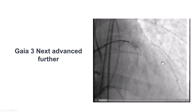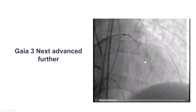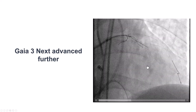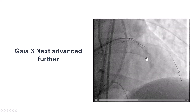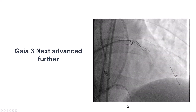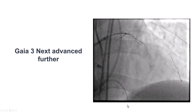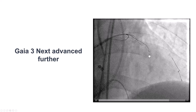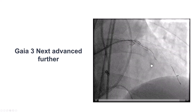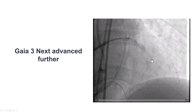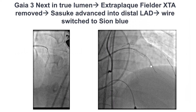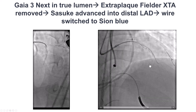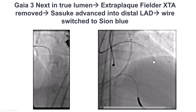And after some manipulation, we were finally able to advance the Gaia-NX3 guide wire that went further down into the LAD. The wire seems to be following the course of the vessel, and going through the previous stent is obviously fairly reassuring. This is a contralateral injection and sure enough, we have actually crossed into the distal true lumen.